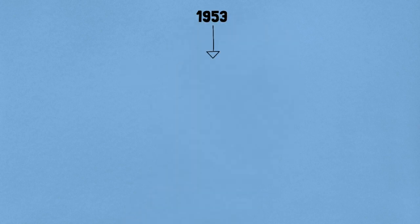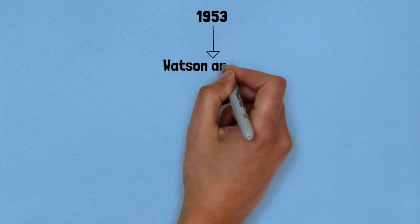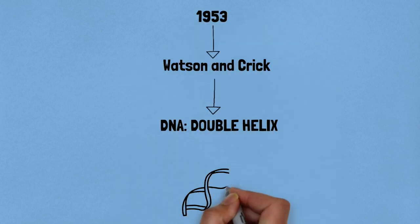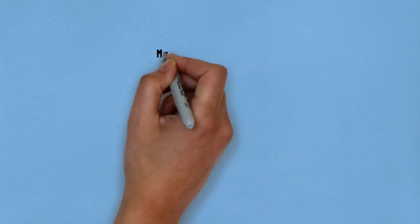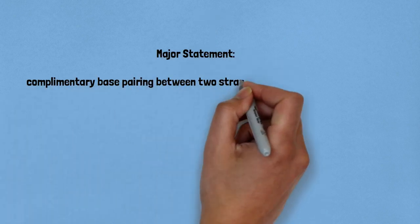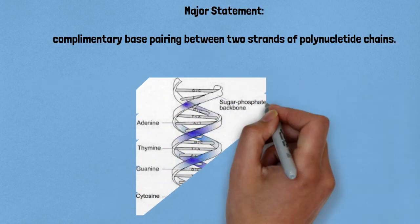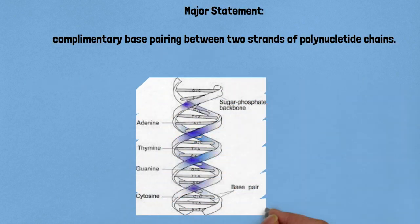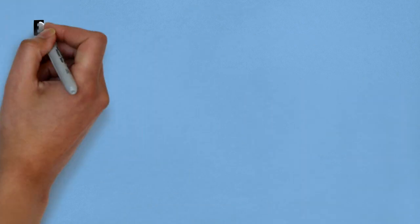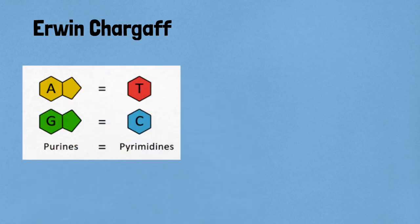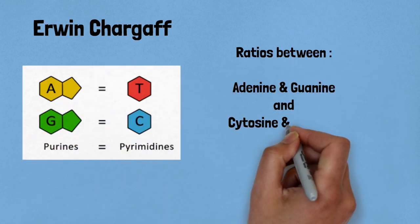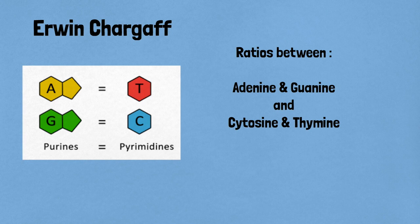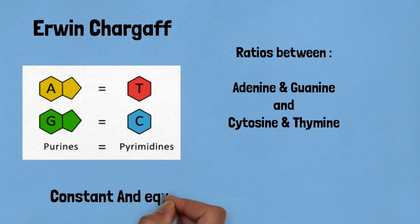In 1953, Watson and Crick proposed the structure of the DNA to be a double helix. One of the major statements they made was about the complementary base pairing between two strands of polynucleotide chains. Erwin Chargaff had previously stated that for a double-stranded DNA, the ratios between adenine and thymine and guanine and cytosine are constant and equal 1.